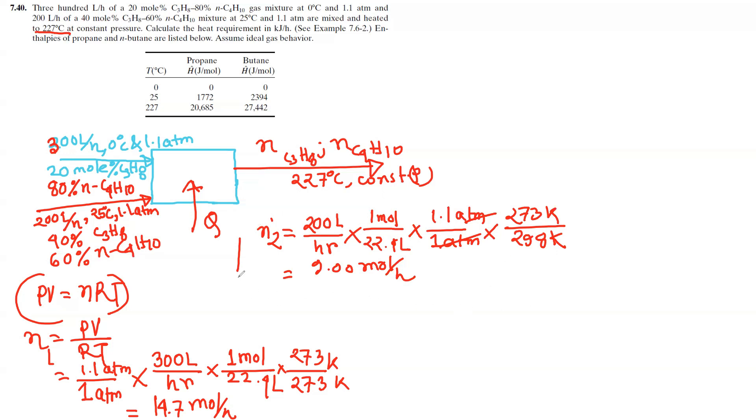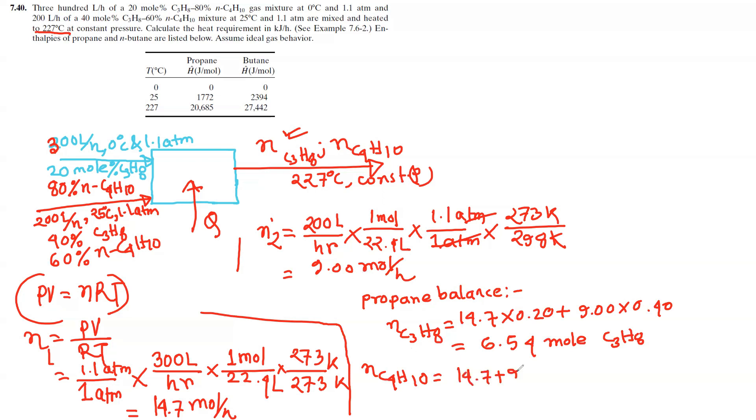Now I'll do the propane balance. C3H8: 12.1 times 0.20 plus 9 times 0.40 equals 6.02 moles. For the butane C4H10, we can calculate similarly.